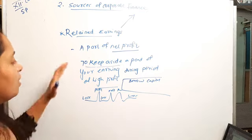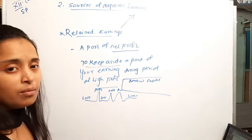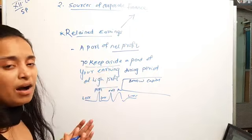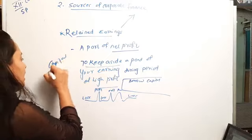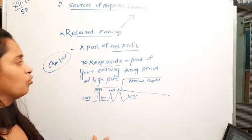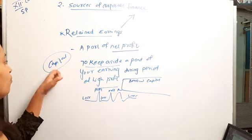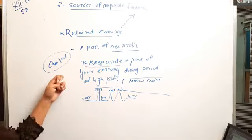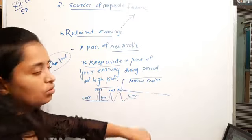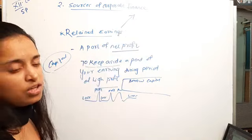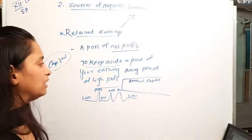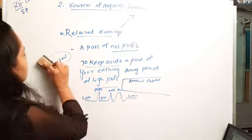If our company is continuously making profit and we slowly start keeping that profit amount aside, a lump sum amount builds up which we can use as capital afterwards. If we accumulate that profit little by little, after some time it becomes our capital. And if we have our own capital, we don't need to borrow capital from anyone else to run the business.